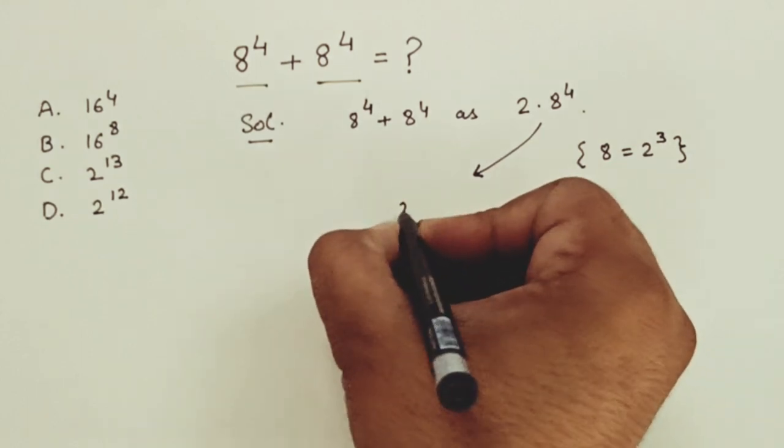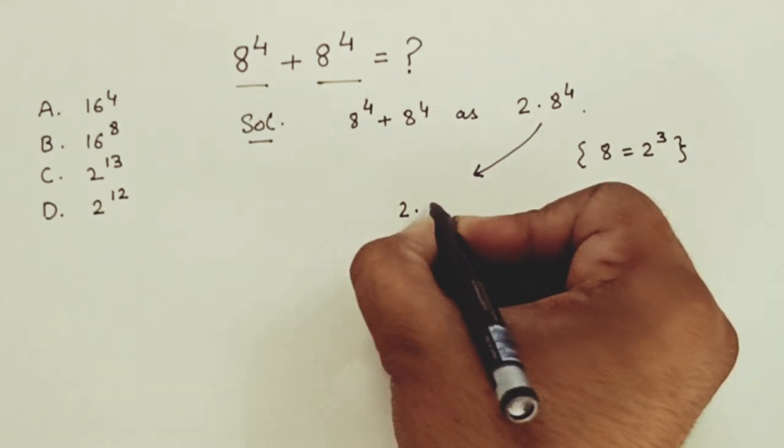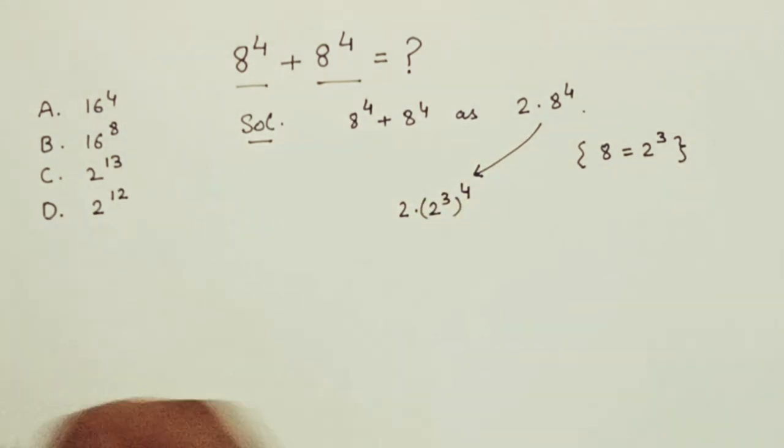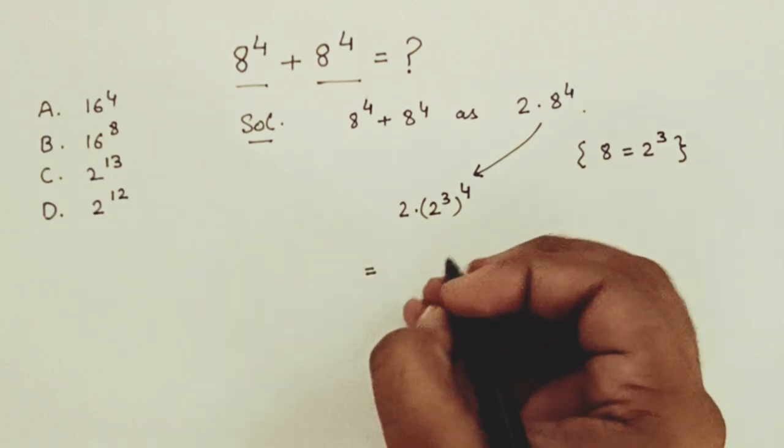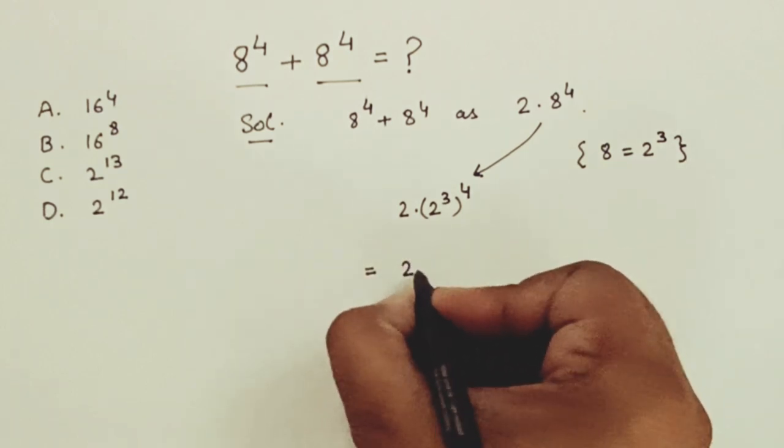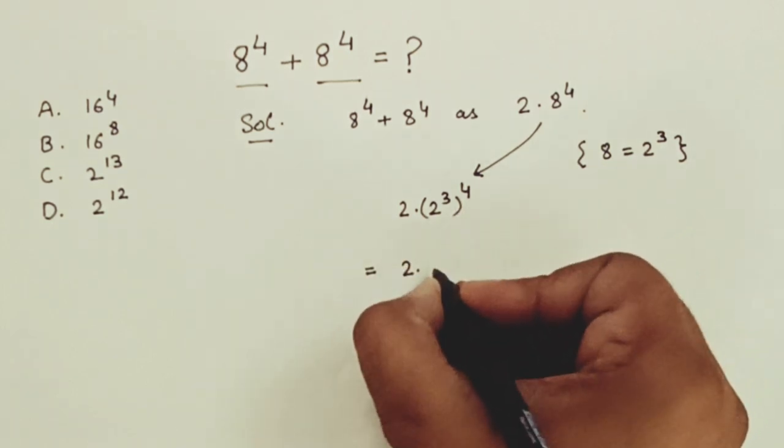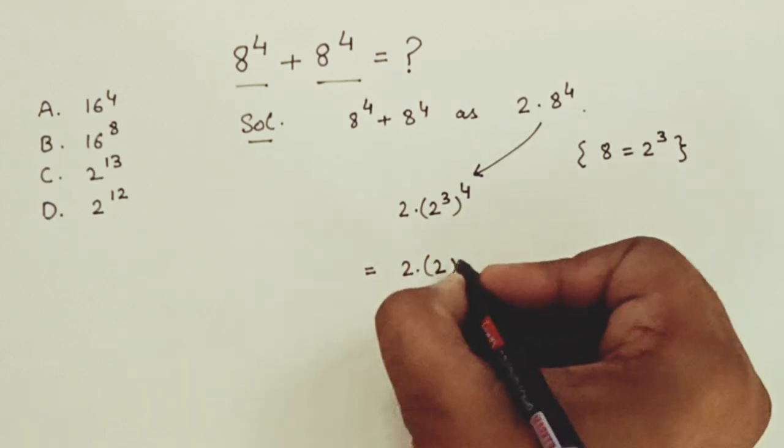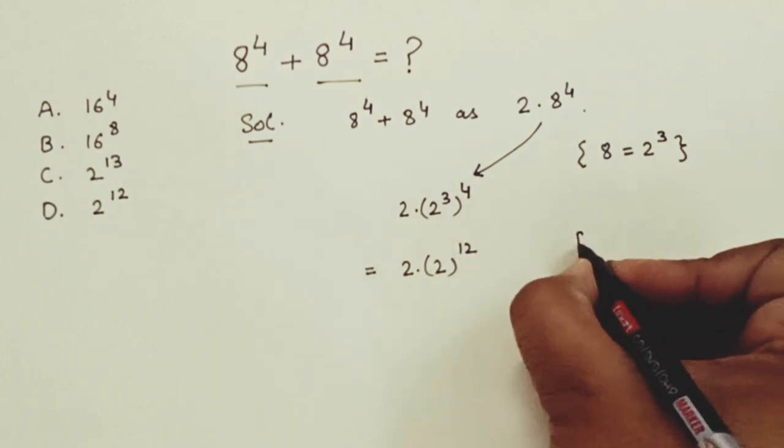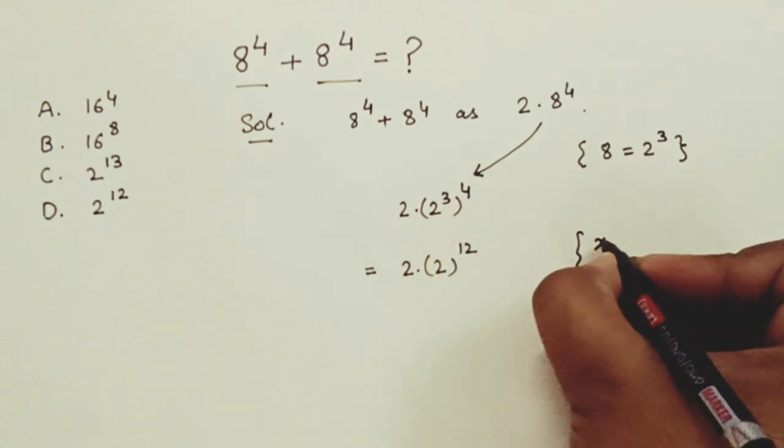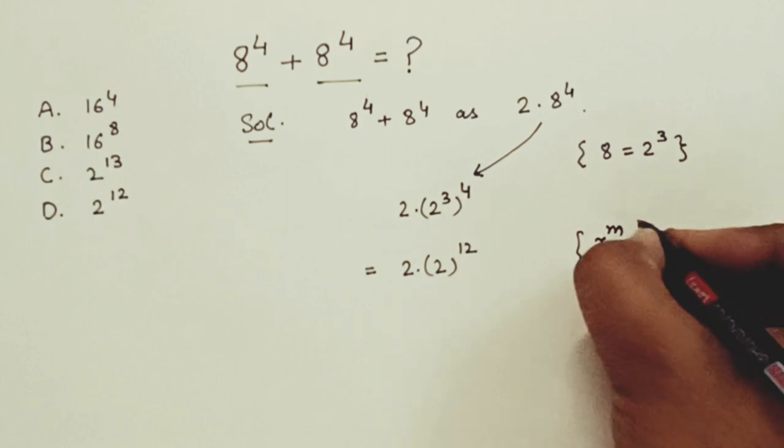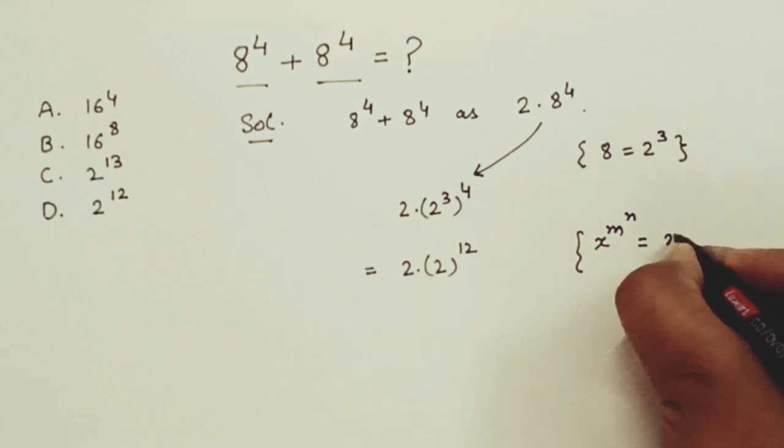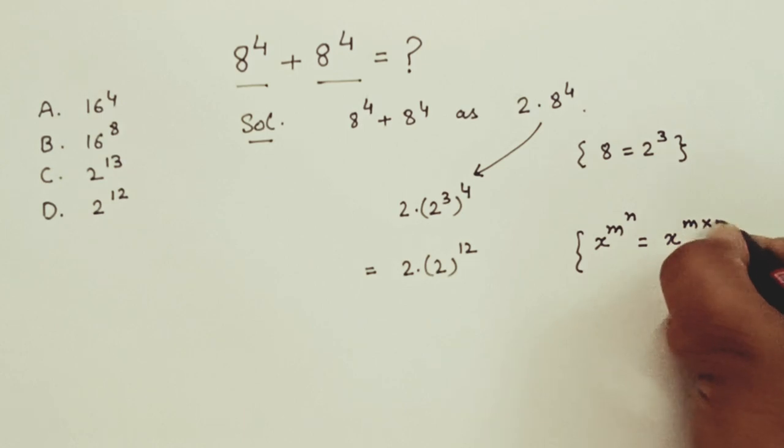We will get 2 into 2 raise to the power 3 raise to the power 4. Now, this can be written as 2 into 2 raise to power 3 into 4 that is 12, because x raise to power m raise to the power n is equals to x raise to power m into n.